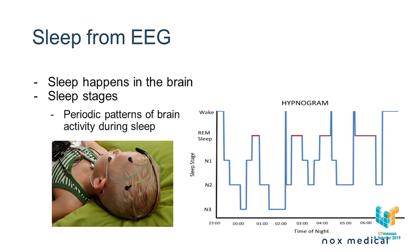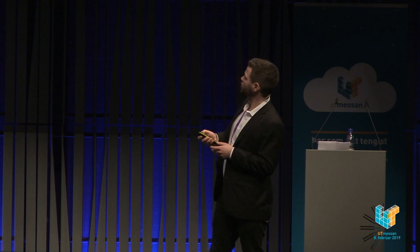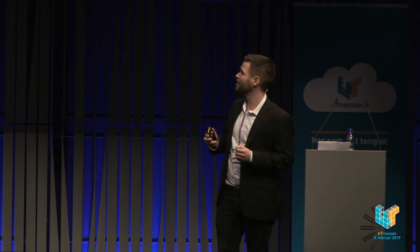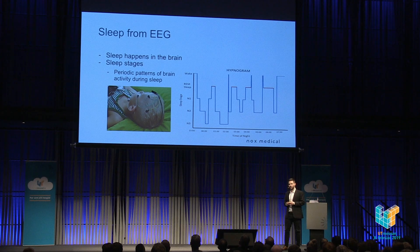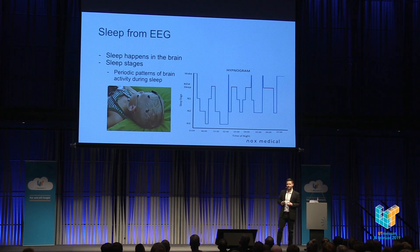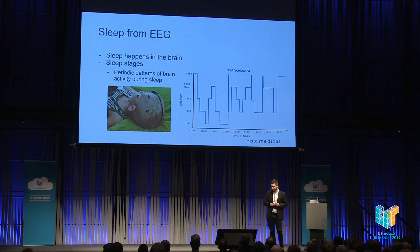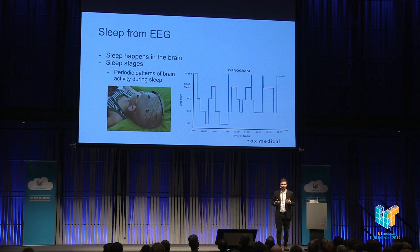Sleep is really defined by the EEG — it's defined by the brain. During sleep, the brain goes into these periodic patterns of brain activity. On the x-axis we have eight hours of sleep, from 11 to 7, and on the y-axis we have five discrete sleep stages: the awake state, then N1 which is sleep onset, N2 which is slightly deeper sleep, N3 which is deep sleep where a lot of memory consolidation occurs, and then REM sleep — dream sleep, when you have these vivid, crazy dreams.